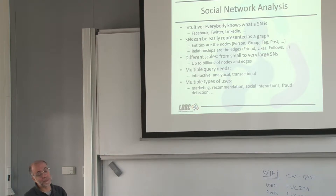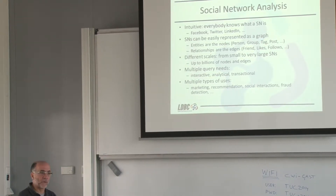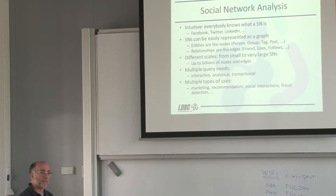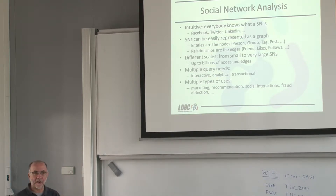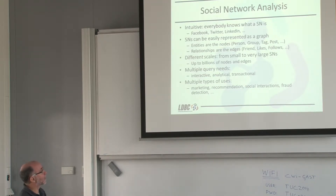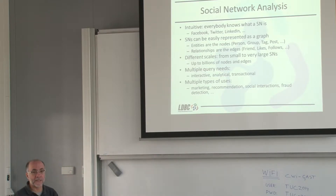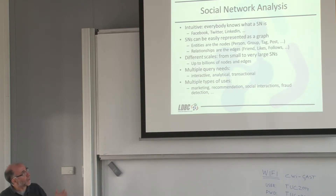We can execute different types of queries — just interactive queries to know the friends of a person or the last post of a person, or even more analytics to know the activity of a group of people during the last three months. Also, you can execute classical graph algorithms such as PageRank or bipartite analysis over the whole network or part of it. And there are many types of users: marketing recommendations, analysis of interactions, fraud detection — making social networks probably the best example to work with as a benchmark for the graph area.